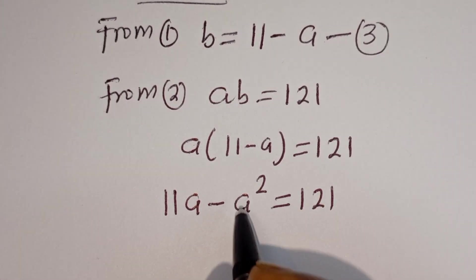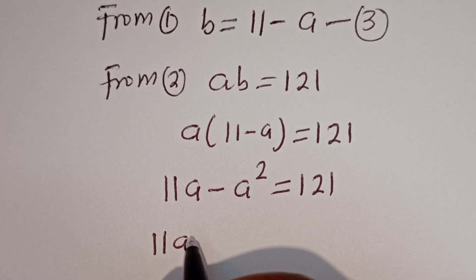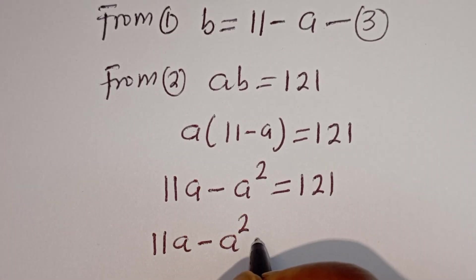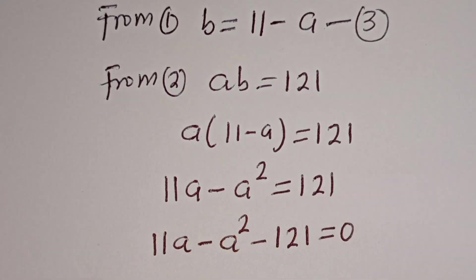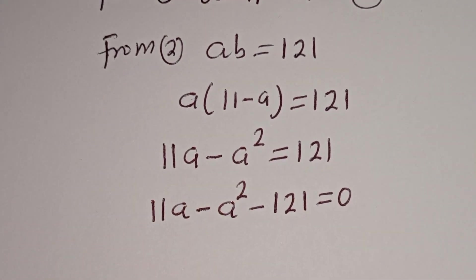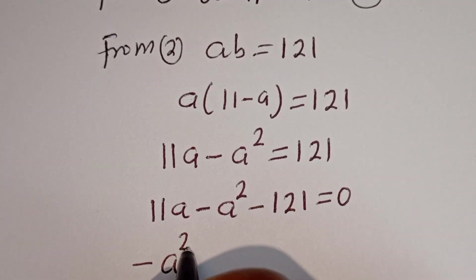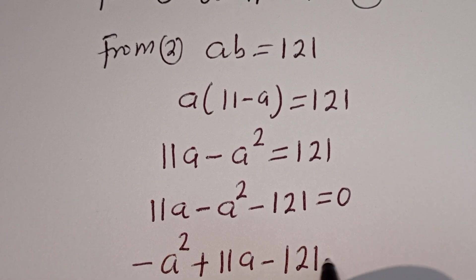Then let's bring this 121 to this side. We have 11A minus A squared minus 121 is equal to 0. Let's write this in standard form: minus A squared plus 11A minus 121 is equal to 0.